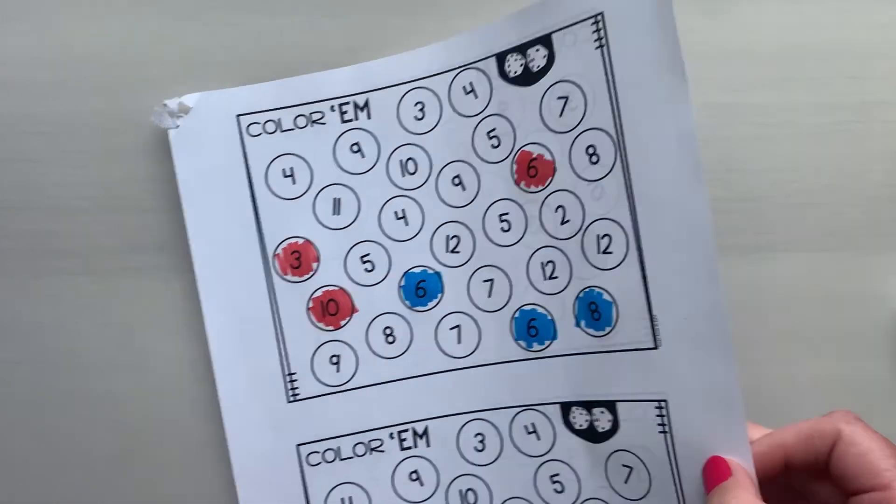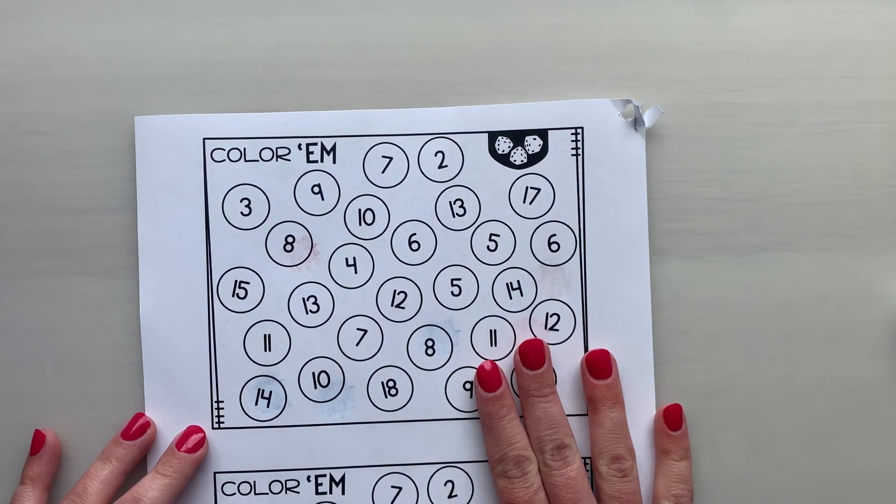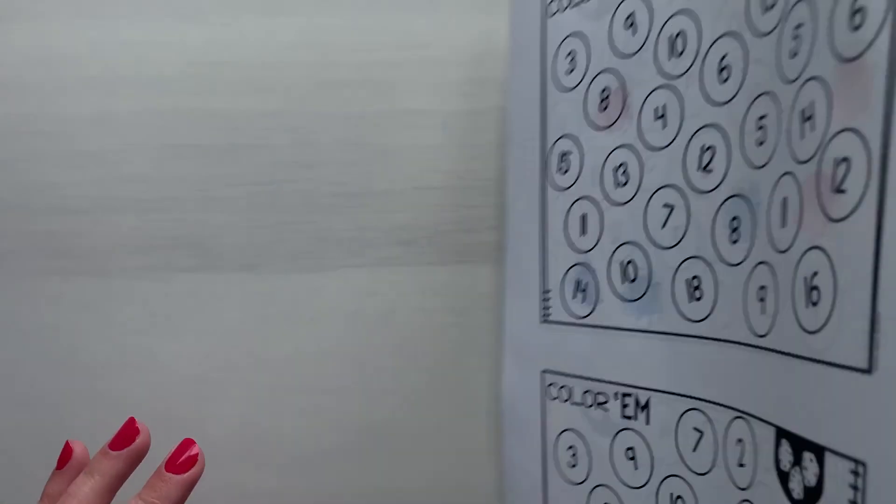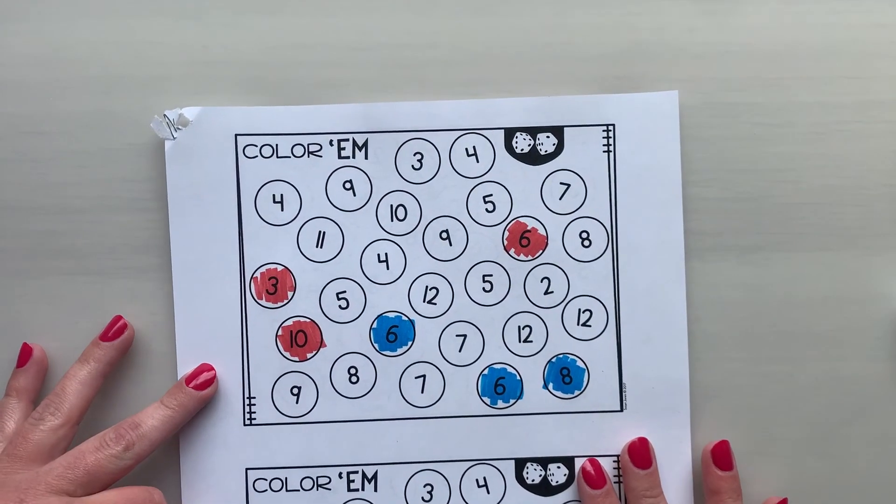And then if you want to play, this side is to play with three dice. So that is how you play Color'em.